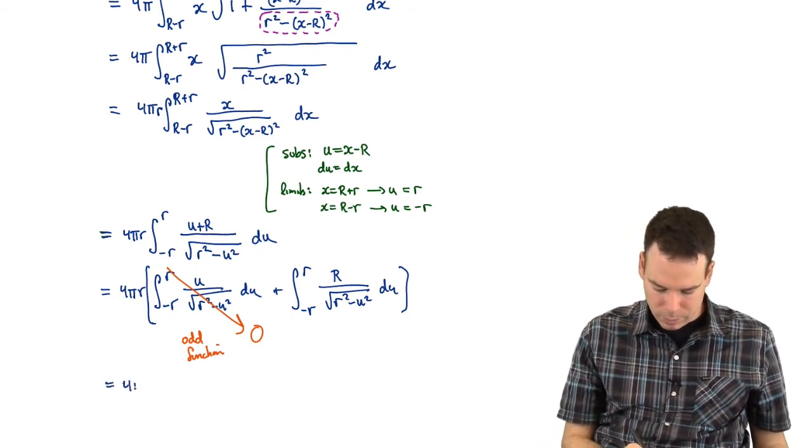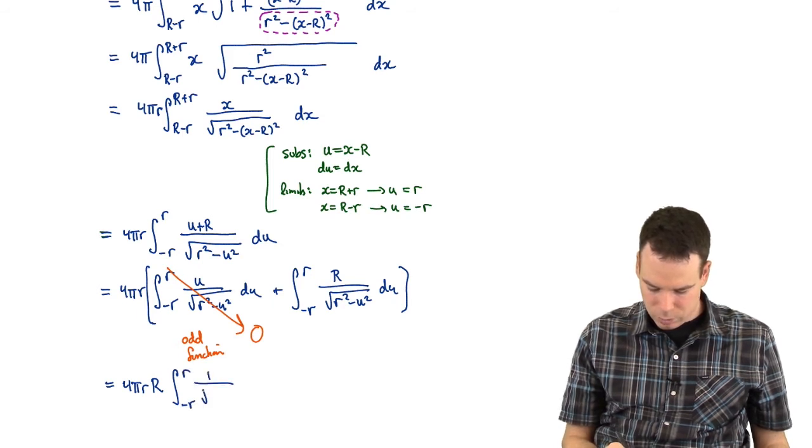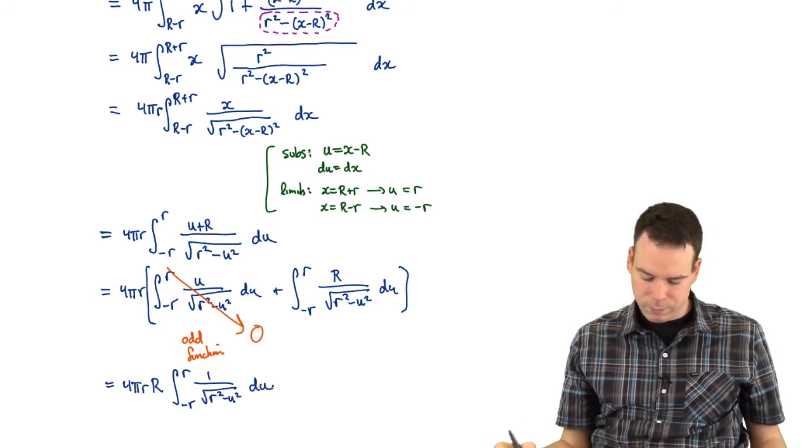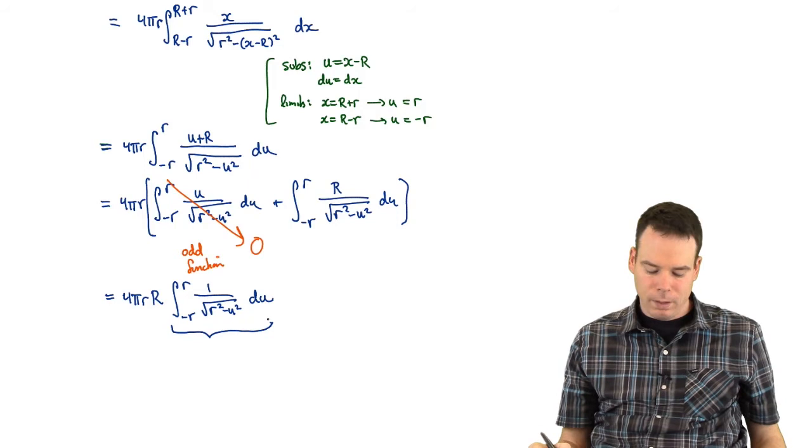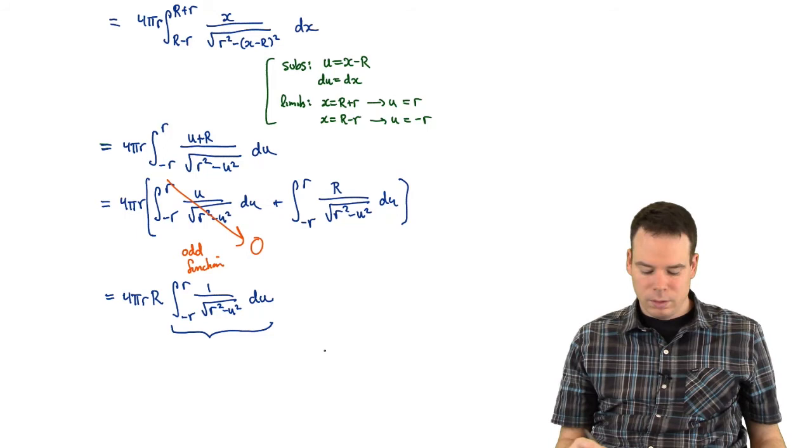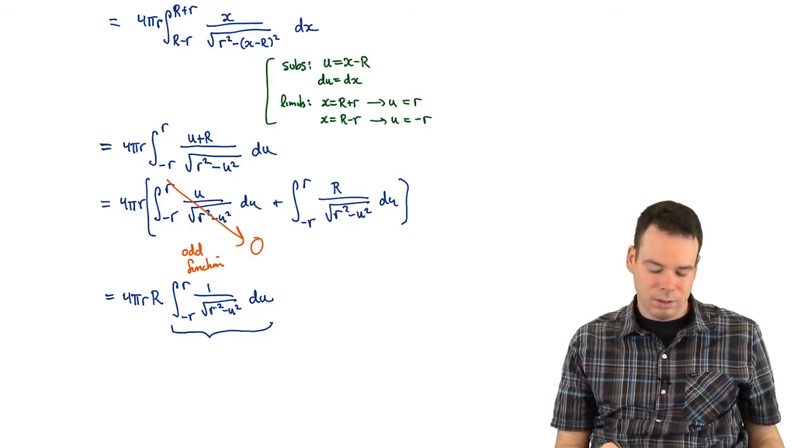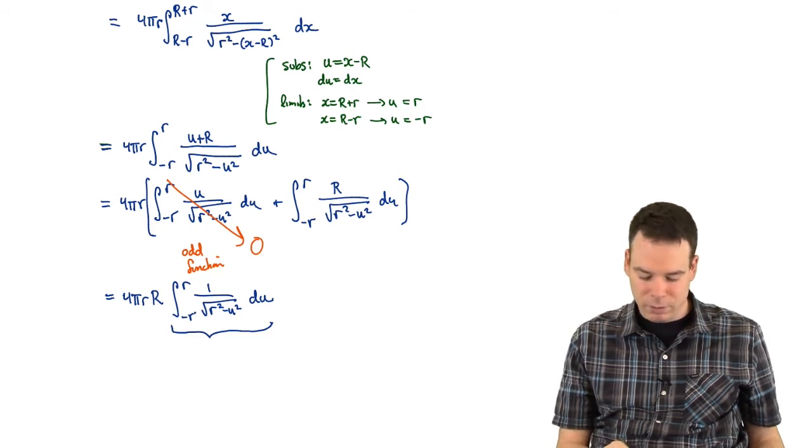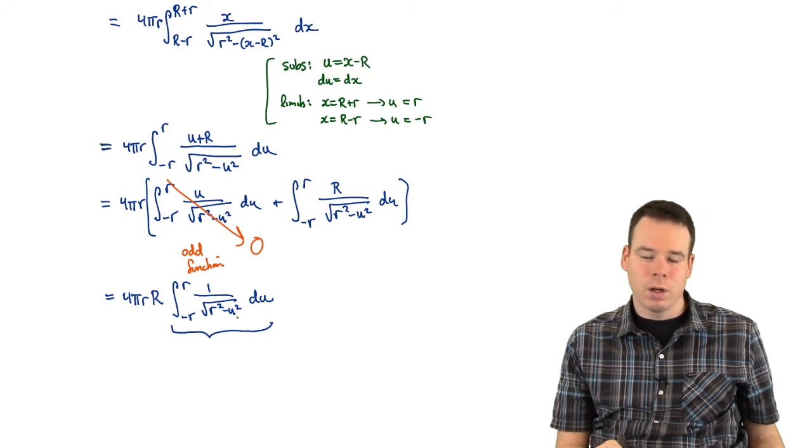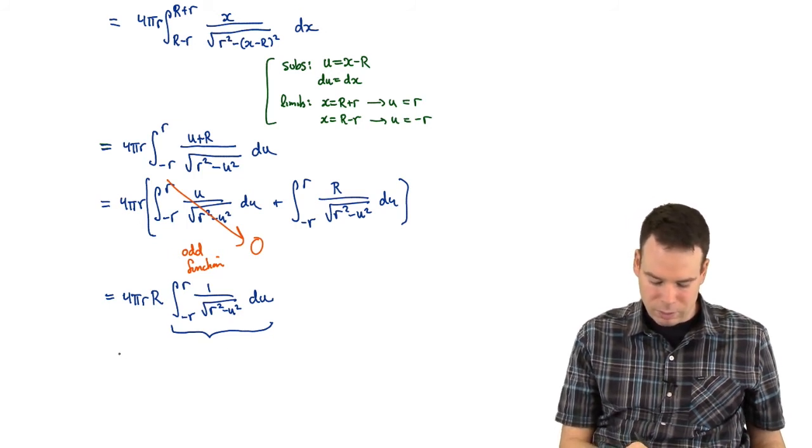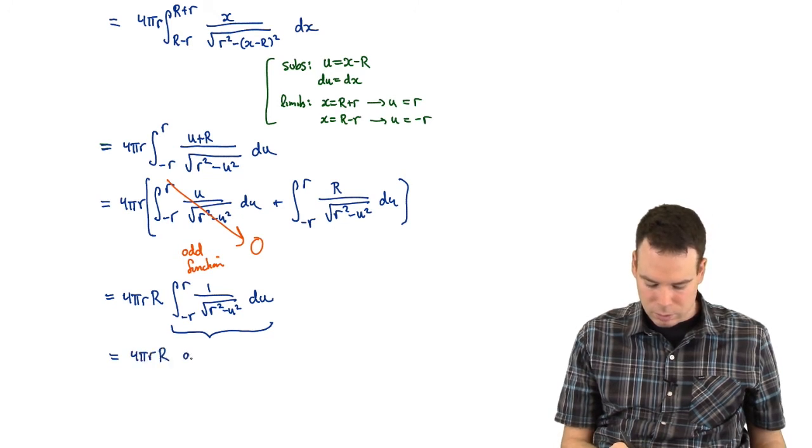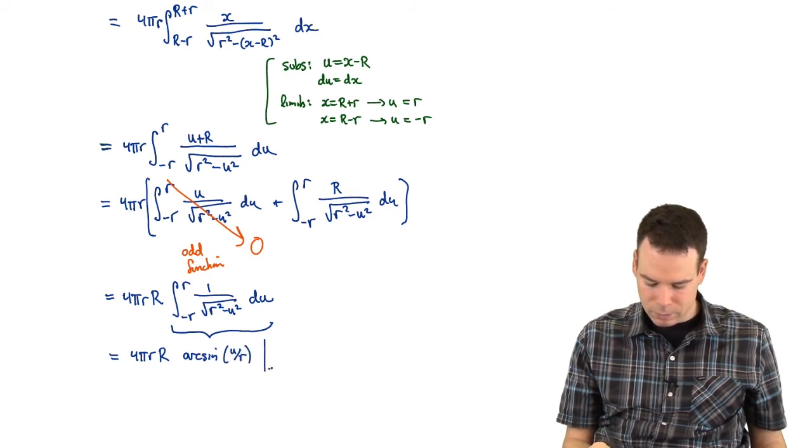So this becomes 4πrR times the integral from -r to r of 1 / √(r² - u²) du. Now, we've boiled it all the way down to trying to figure out what this integral is. What's the antiderivative of 1 / √(r² - u²)? Well, that looks very close to an arcsin. For arcsin, it would be nice if it was √(1 - u²), but instead we have √(r² - u²). But I can make a substitution. At this point, we can fiddle around with it and make a substitution, but the point is that the antiderivative in this case is arcsin. So it's arcsin(u/r) from -r to r.